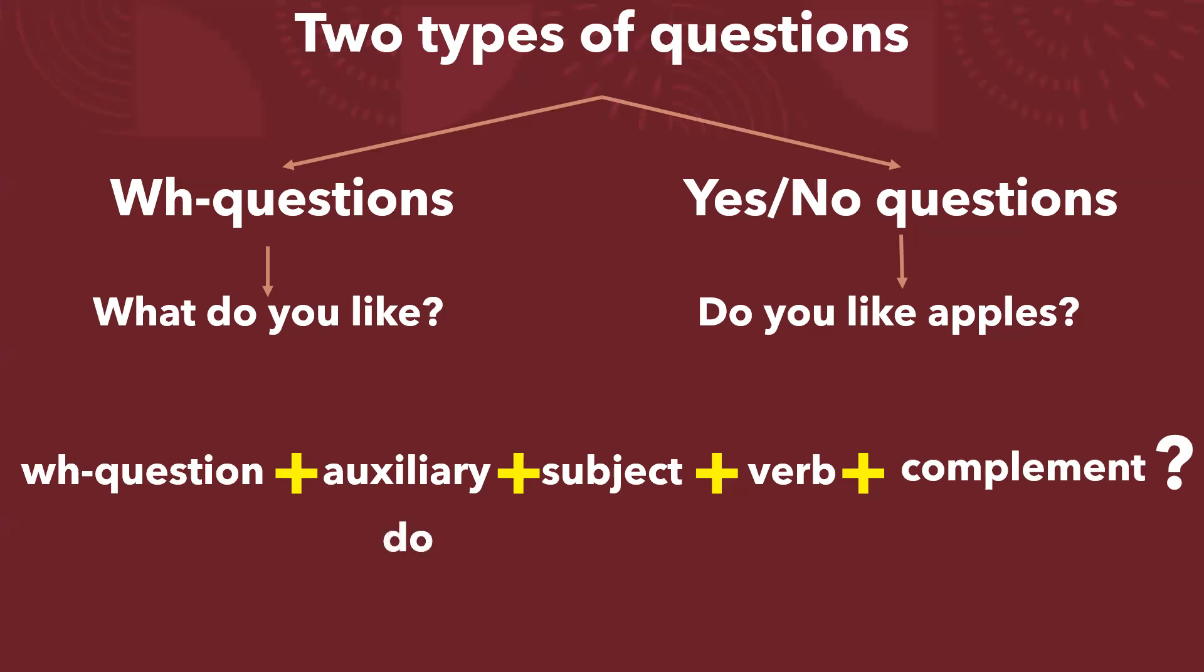Veamos un ejemplo. Do you eat vegetables? Do you eat vegetables? ¿Comes vegetales? Estamos en presente. Recuerden lo que hemos hablado ya del time tense. Lo define el auxiliar. Pero, ¿qué pasaría si esta pregunta la queremos hacer? Una pregunta abierta. Agregamos una palabra interrogativa, una WH question word at the beginning. Why do you eat vegetables? ¿Por qué comes vegetales? Why do you eat vegetables?